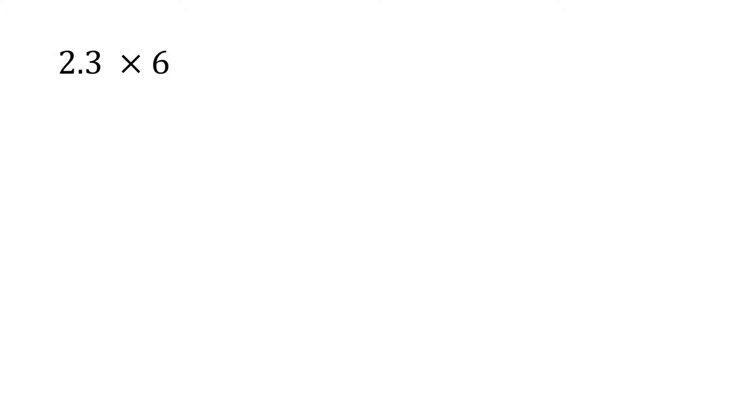So the question here asks us to find the product of 2.3 multiplied by 6. Thinking back to my steps, I have to estimate, then multiply, and then place the decimal. So first I'm going to estimate. I know 2.3 is close to 2, so 2 times 6, we know that's 12, so our final answer should be somewhere near 12. We've got our estimation done.